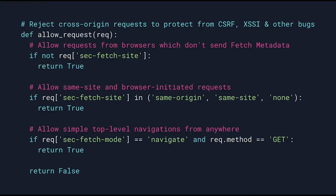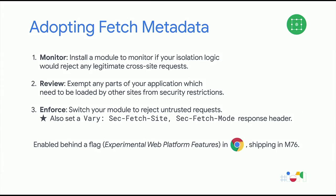A very simple resource isolation module allows requests that are same-origin and same-site, but bans cross-site ones. The module first allows all requests without the headers for backwards compatibility, then checks if the request comes from a trusted site and allows it, and finally for cross-site requests that could be dangerous, it checks if the request is a navigation — because we still want to allow cross-site links. You can adopt these protections by implementing logic like this module, first in reporting mode without enforcing restrictions, then after fixing any compatibility issues, start enforcing the logic. This feature is already implemented in Chrome and shipping in the next stable version.